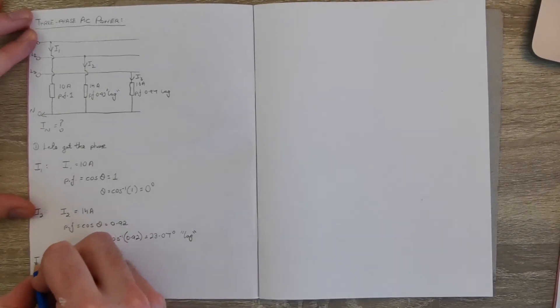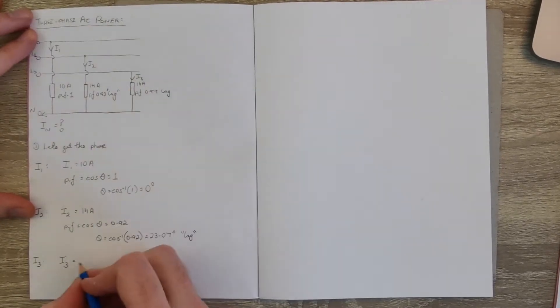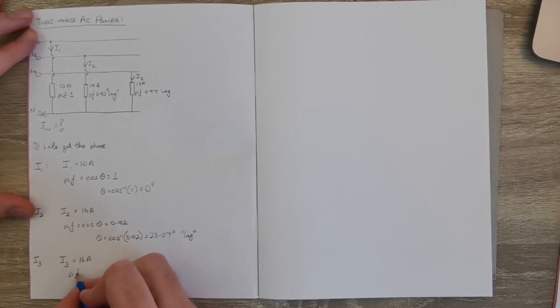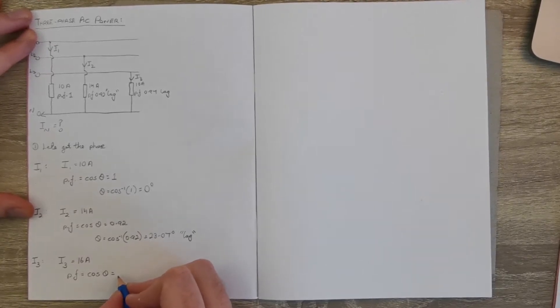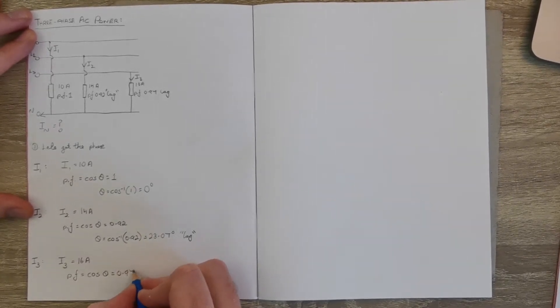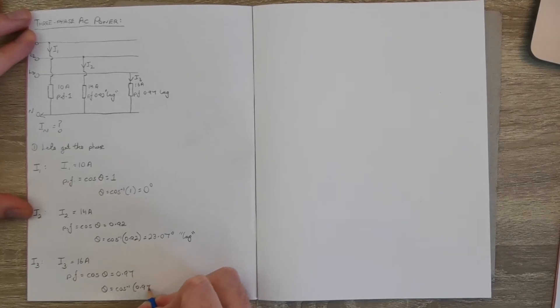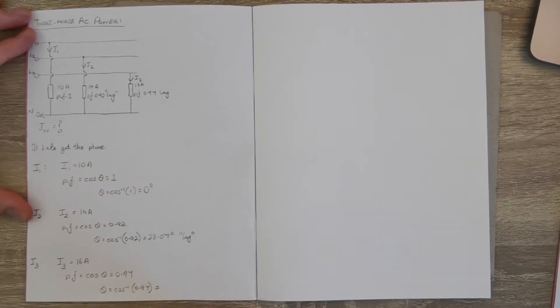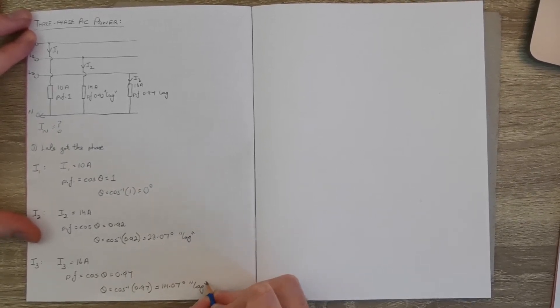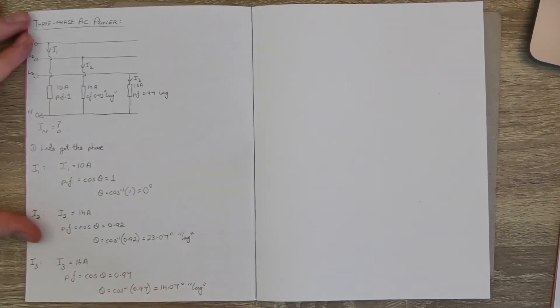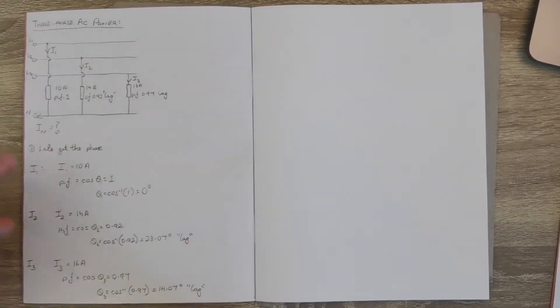Now for i3. Again i3 is 16 amps and the power factor or cos theta for this is 0.97. So the phase for this one will be the cos inverse of 0.97, and that works out at 14.07 degrees, and again this is lagging. So I'm also going to label these angles 1, 2, and 3, just so we're clear which one belongs to which phase.